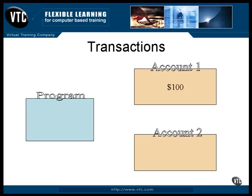Doing it in a different order can be just as bad. Before you remove the money from one account, you simply add it to the other. But before you can remove it from the first account, the system goes down. When you bring the system up again, you have twice as much money recorded as you had originally.